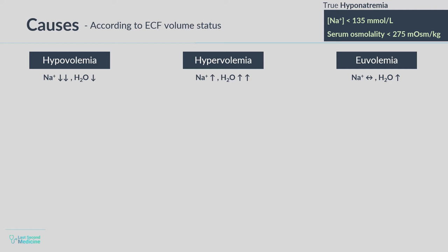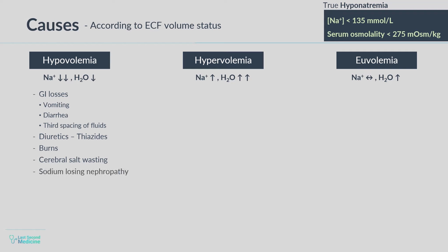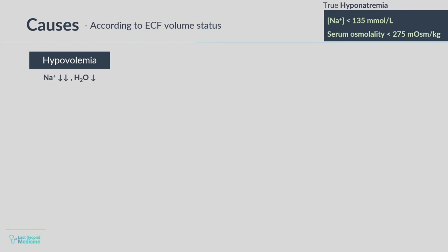Hypovolemic hyponatremia is seen in situations with fluid losses such as GI losses due to vomiting, diarrhea, or third spacing of fluids. Next, the use of diuretics — especially thiazide — burns, cerebral salt wasting, and sodium-losing nephropathy. And last but not least, volume contraction as seen in adrenocortical insufficiency. You will find symptoms and signs of hypovolemia in this category and the cause of sodium loss is usually apparent.